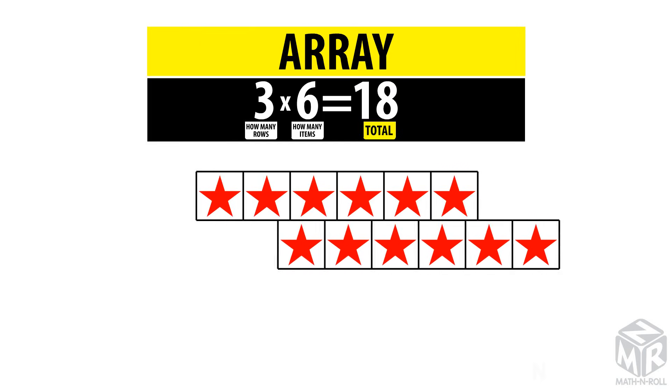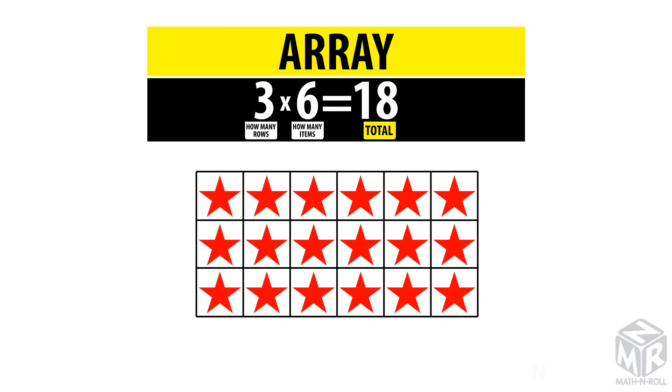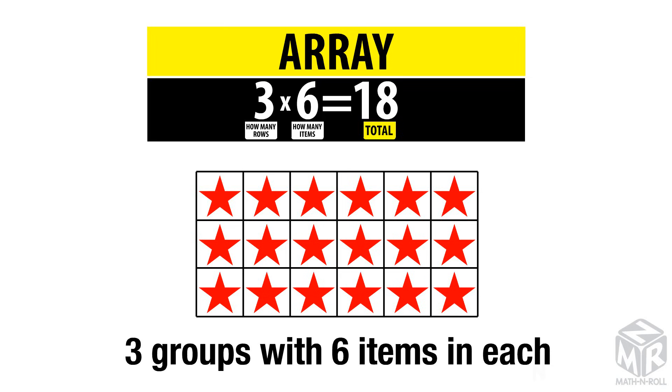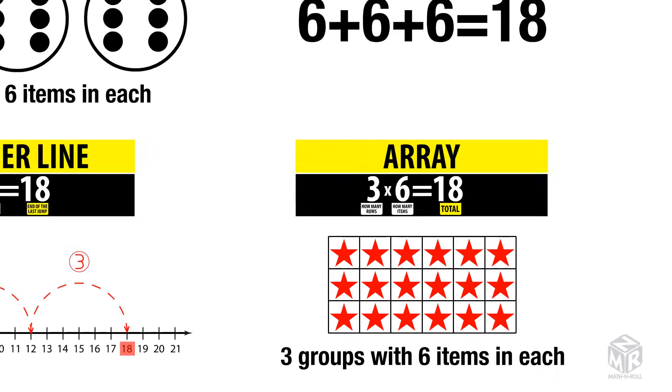In this example, we have three rows and six columns, or three groups with six items each. So three times six equals 18.